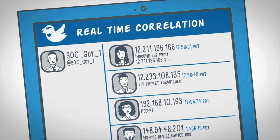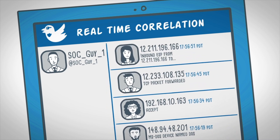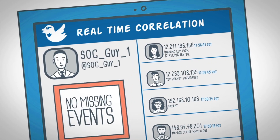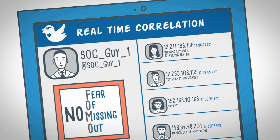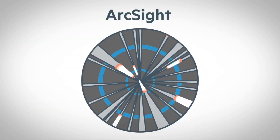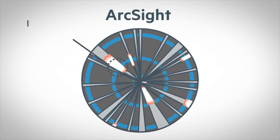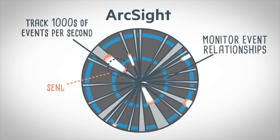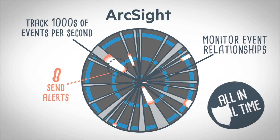As with modern social media feeds, you never want to miss the next event, and RTC makes sure security analysts never suffer from FOMO. ArcSight's powerful correlation engine tracks thousands of events per second, using rule sensors to monitor event relationships and send an alert when something suspicious occurs, all in real-time.